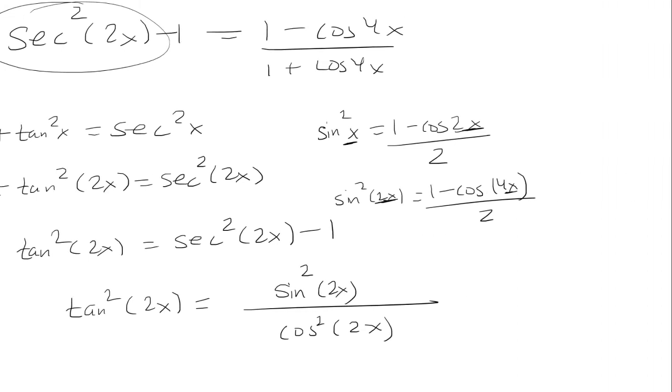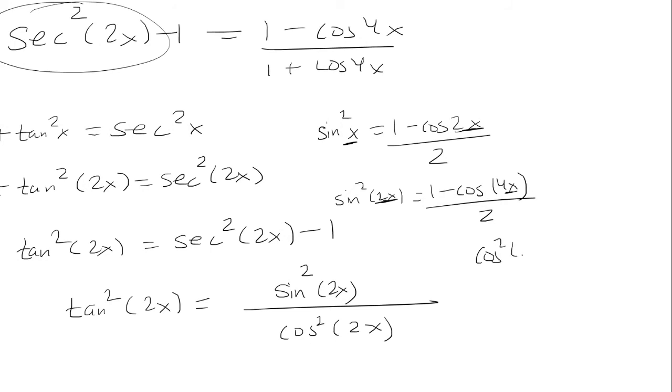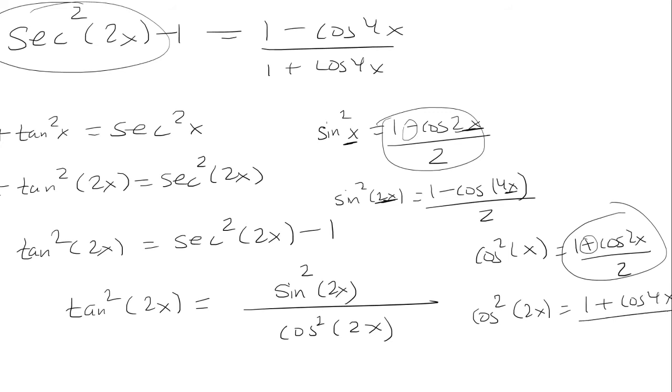Similarly, I'm going to do that for cosine squared. That would be 1 plus cosine 2x over 2. So if you look at the difference between these two formulas, the only difference is the sign over here. One is minus, the other one is plus. So cosine squared 2x will be the same thing except you're just going to have a plus. So this is minus, this is plus, and then you're doubling the angle.